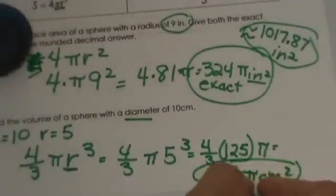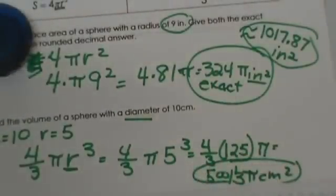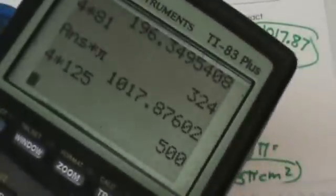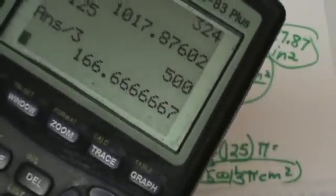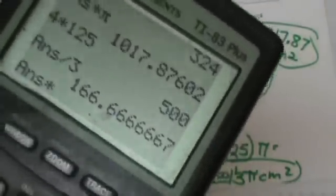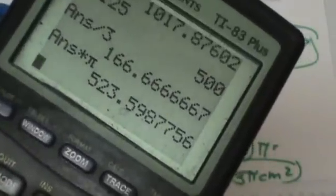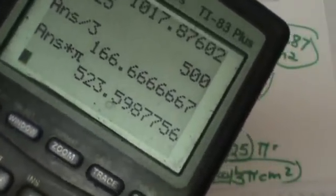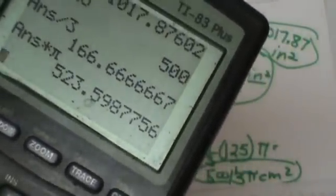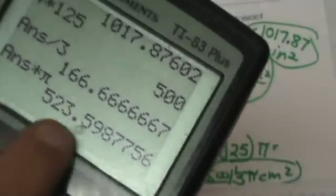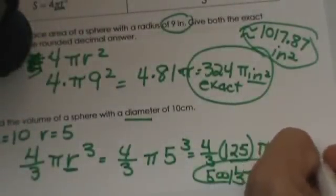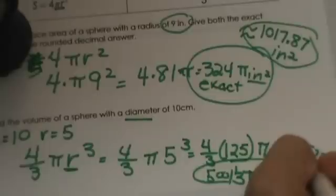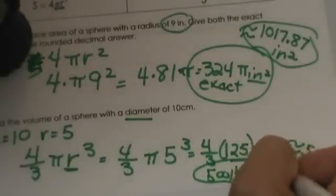To find an approximate, we'll take 500 divided by 3 times our π button, and we're going to estimate that to 523.60. So the approximate value is 523.6 centimeters cubed.